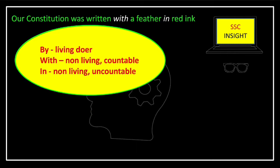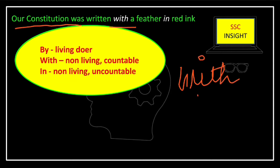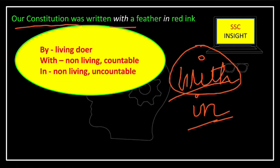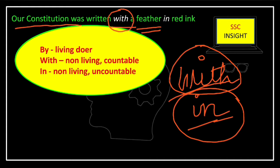To understand where we use 'with' and where we use 'in': in case of a living doer, it will be 'by'; in case of a non-living but countable noun, we use 'with'; and in case of a non-living but uncountable noun, we use 'in.' For example: 'Our constitution was written with a feather in red ink.' Feather is countable, so we use 'with,' and ink is uncountable, so we use 'in.'